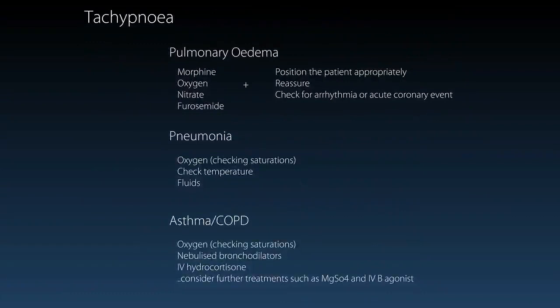Tachypnea is a very sensitive sign and can be caused by many things, but often gives a clue to a breathing emergency. Common pre-hospital causes include pulmonary oedema, pneumonia, and asthma and COPD with airway narrowing. These can be treated similarly to in hospital — patients need oxygen based on their saturations and should be reassured and taken to hospital rapidly. Also check for underlying medical conditions such as arrhythmias causing pulmonary oedema, and treat these as appropriate.